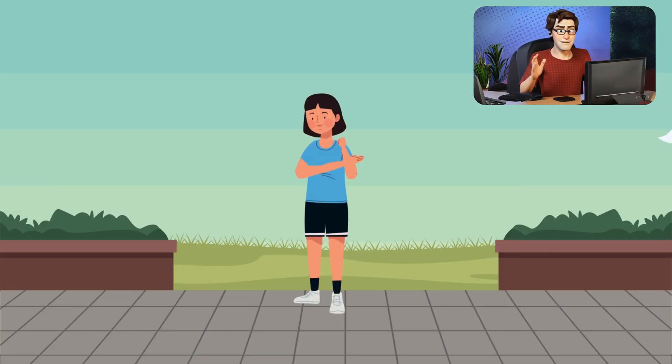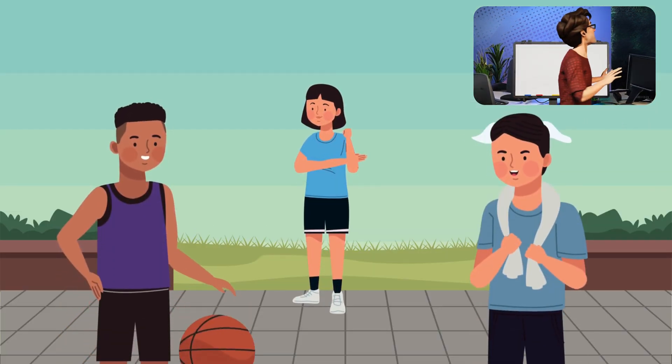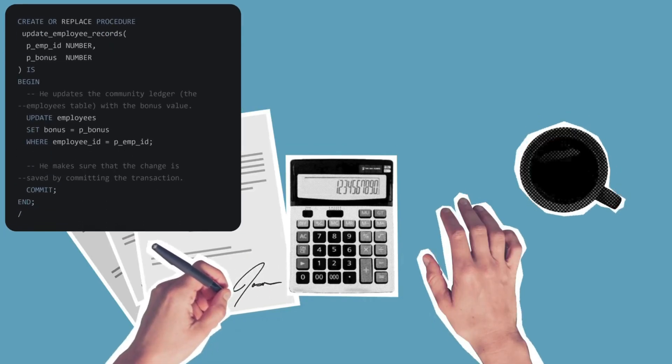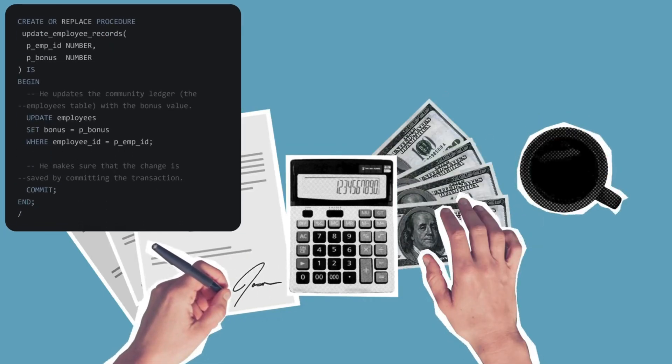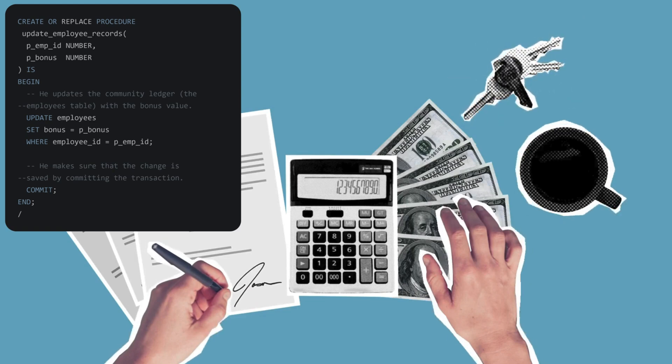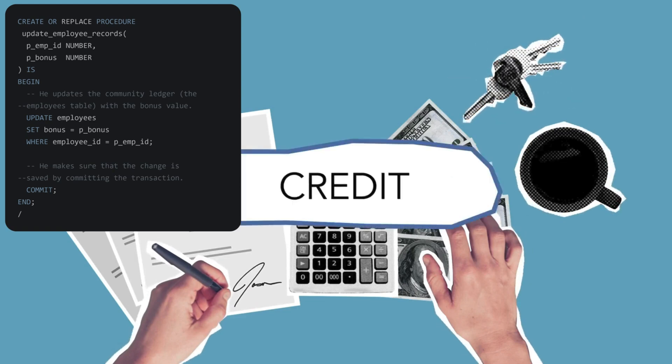On the other hand, Procedure was the taskmaster. When villagers had a series of tasks like updating records in the community ledger or fixing broken items, Procedure would listen to their long list of instructions. He didn't worry about giving a single answer because his job was to complete the whole list of chores.